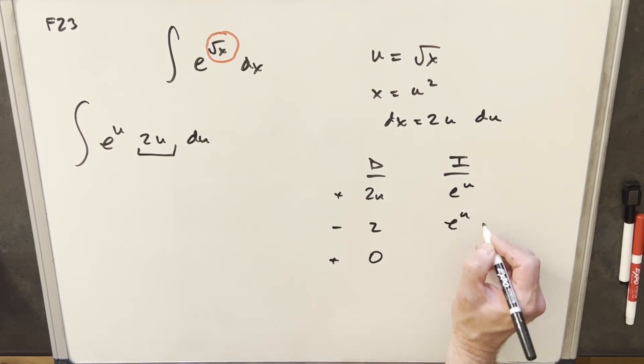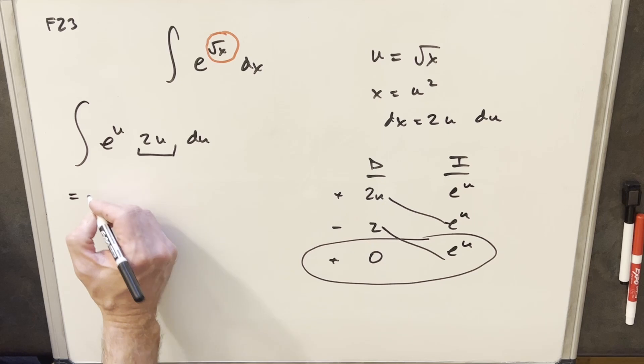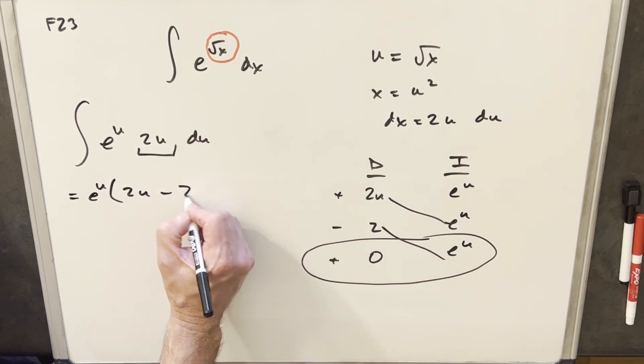Integrating this, we can integrate all day, and it's always going to be e to the u, so that's nice. This last row is an integral, but it's 0, so I'm not worried about that. We can just go right to look at an answer on the diagonals here. We'll have an e u in both terms, so I'm just going to factor out an e u. And then we're going to have 2u minus 2.